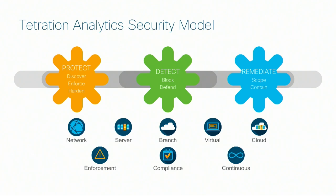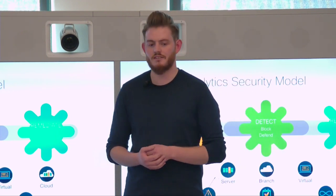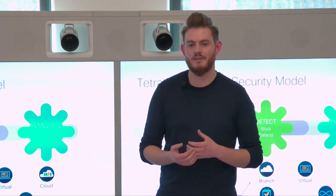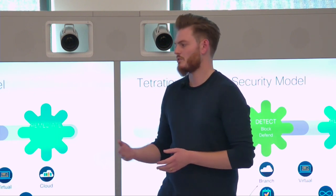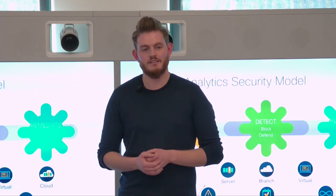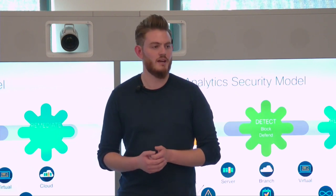Our model is the protect, detect, and remediate model. This allows customers to understand what in my network should be talking to what, helping them understand their policy, make changes, and put that into their environment. We constantly monitor every packet to detect threats, and when threats are detected we help block them instantly and understand their scope — for example, instantly quarantining an endpoint exhibiting behavioral anomalies.